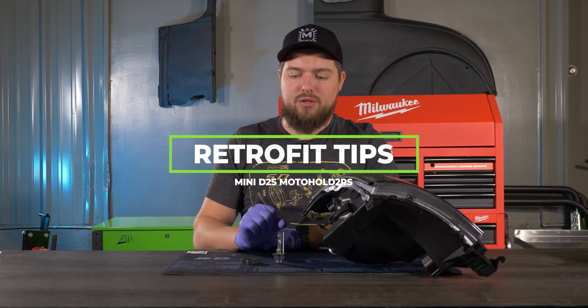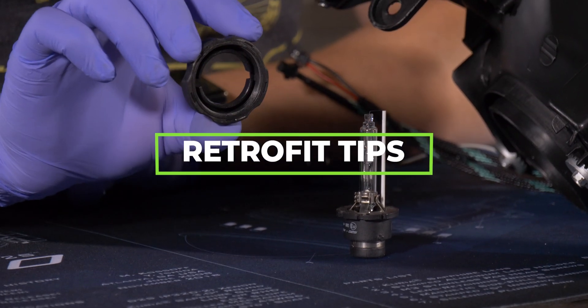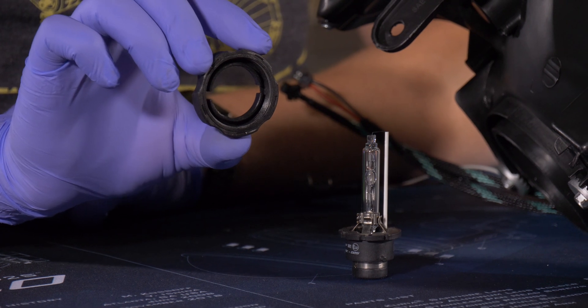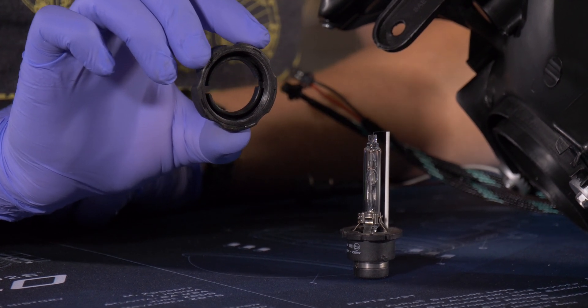Now to secure our bulbs on the projectors, we're going to use our D2S moto holders. These have a nice slim design and will secure the bulbs with ease.